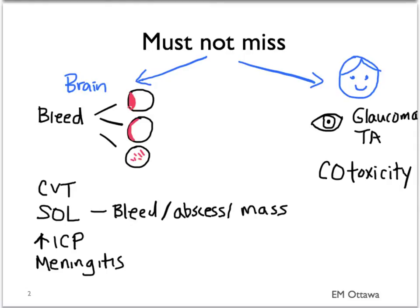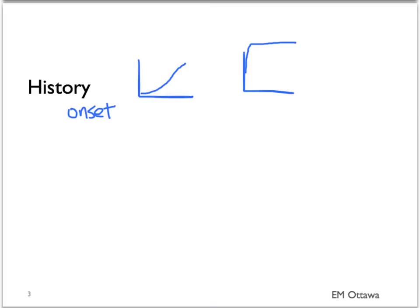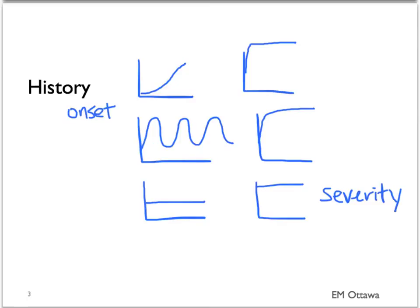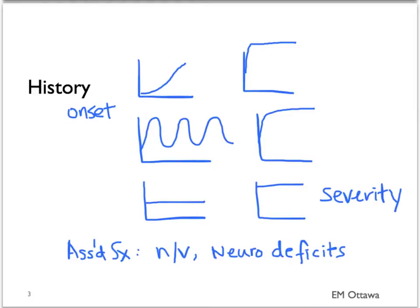We will now discuss the history we will want to elicit based on these diagnoses. As with all history, we will want to know about the onset of symptoms, whether it is gradual or sudden onset, intermittent or constant, the severity, and the nature of the pain. We also want to know about associated symptoms such as nausea, vomiting, neurological deficits on history, and fever.